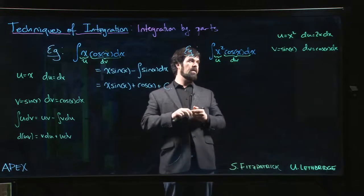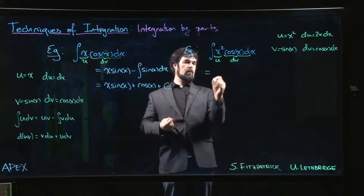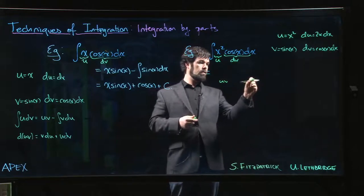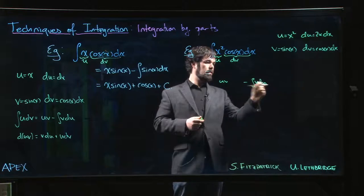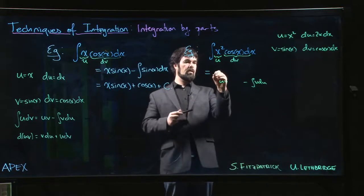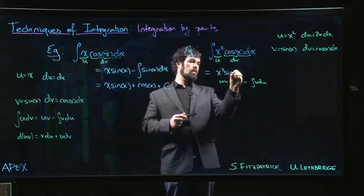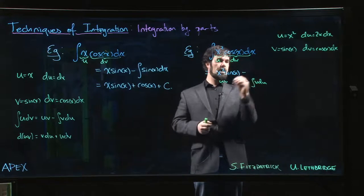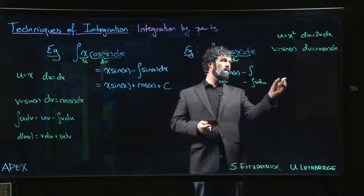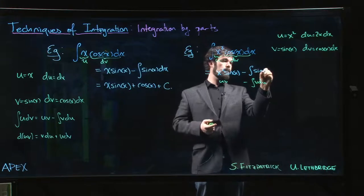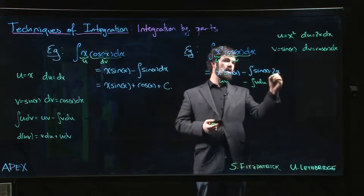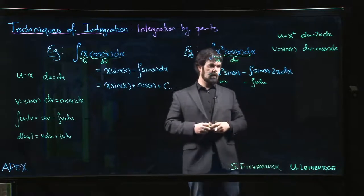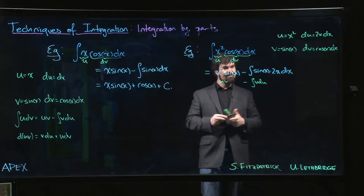So this becomes - remember what we want is we want uv and we want the integral of v du. So u times v is going to be x squared sin x minus the integral of v du. So v is sine x times 2x times dx.